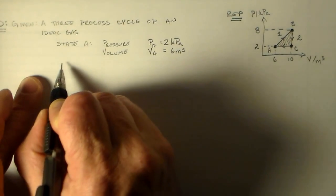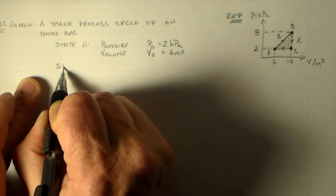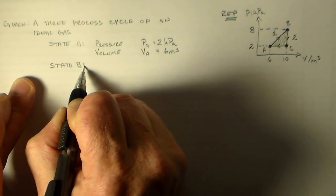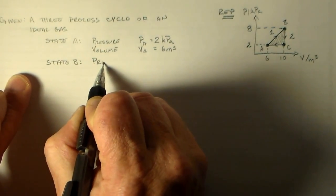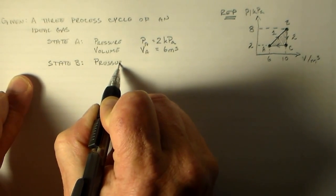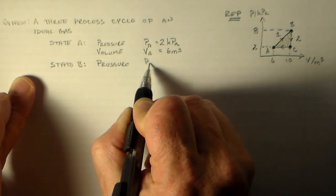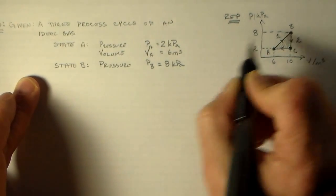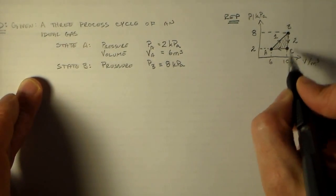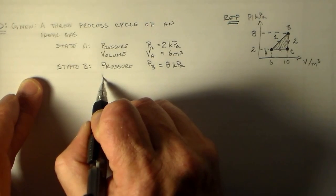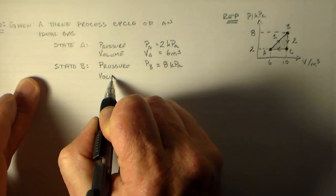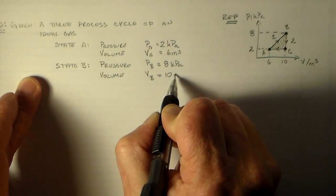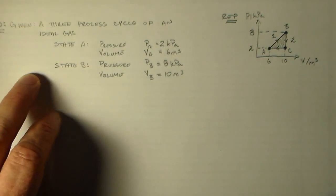Then we go to state B. State B has a pressure PB equal to 8 kilopascals and a volume of 10 meters cubed.